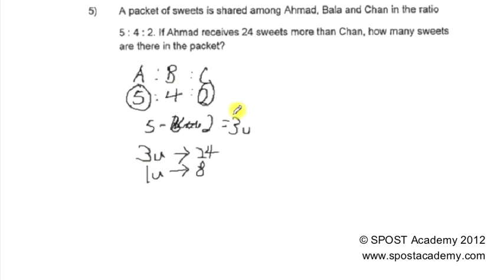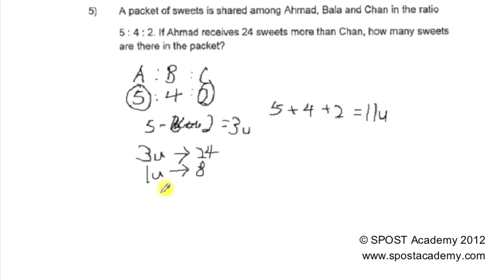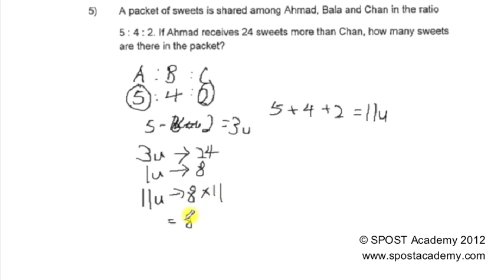So total, how many units are there? We take 5 plus 4 plus 2, which is 11 units. So we need to calculate 11 units: we take 8 times 11 and we get 88 sweets.